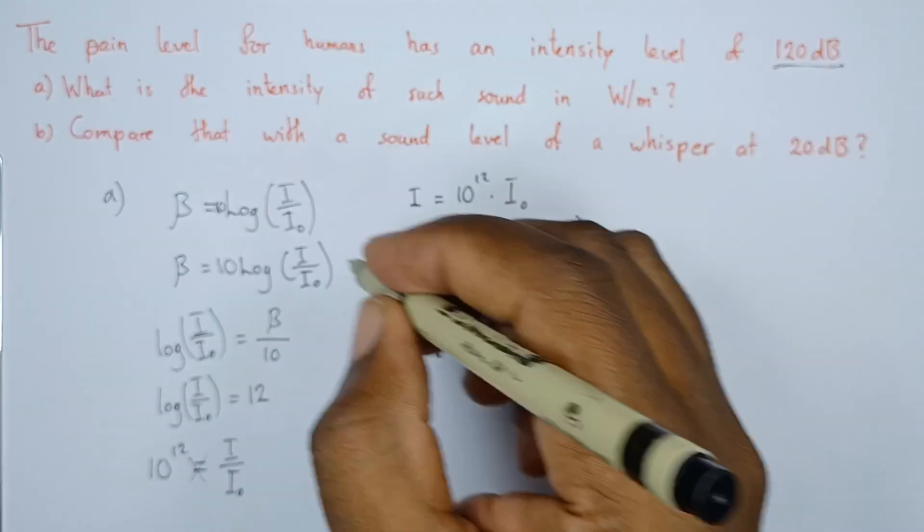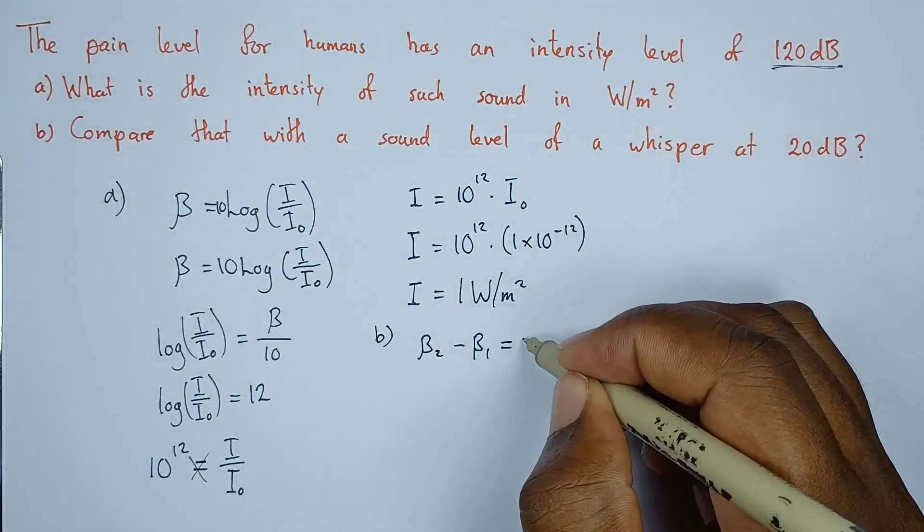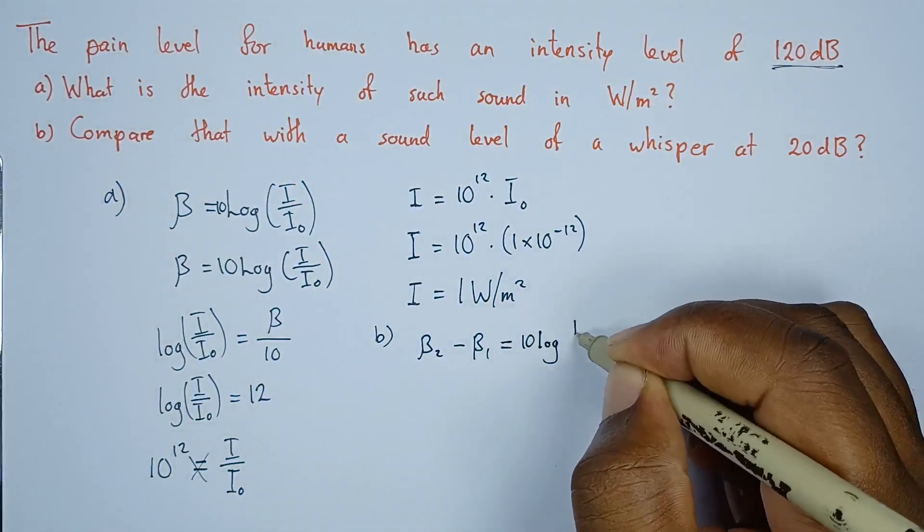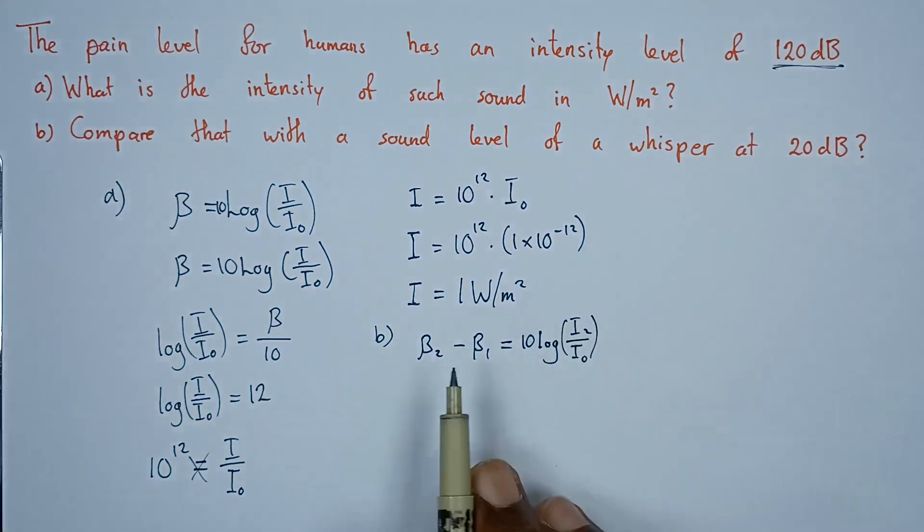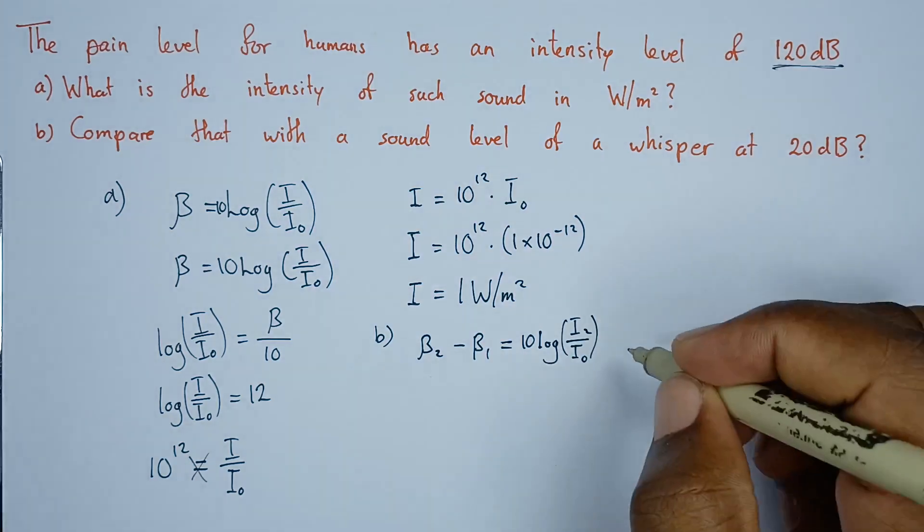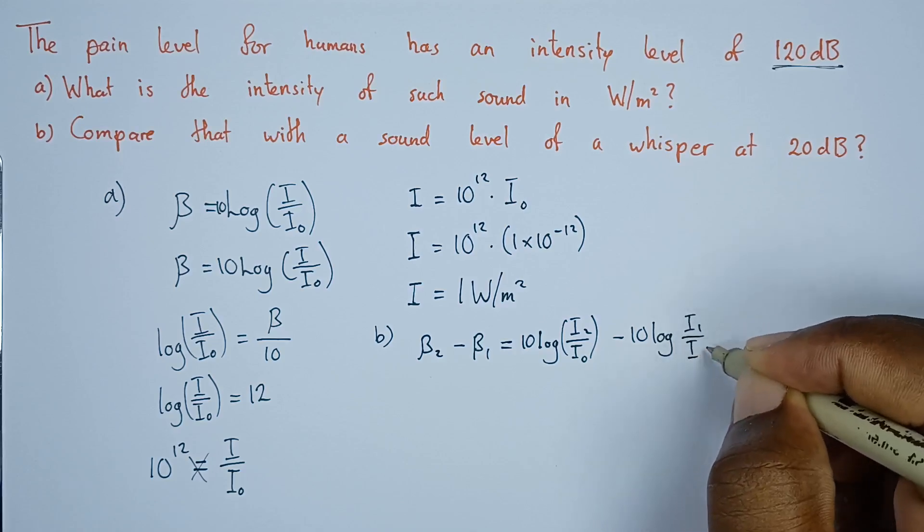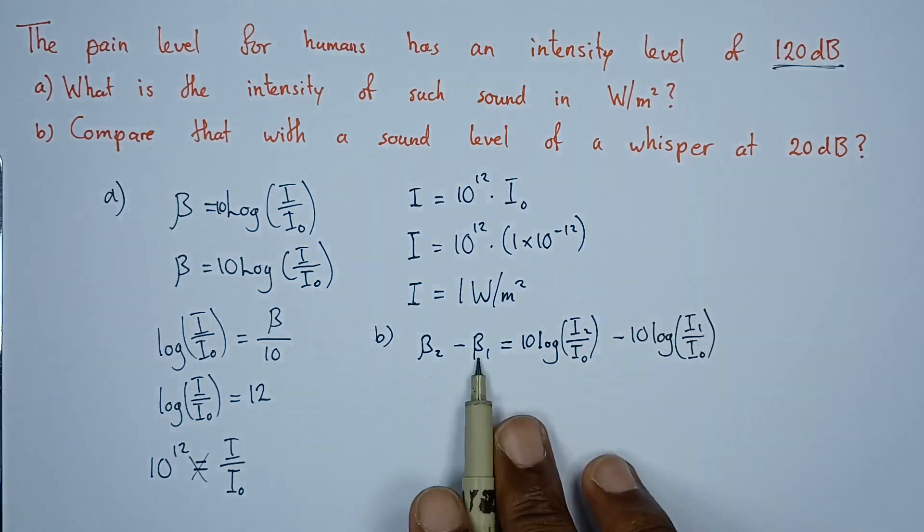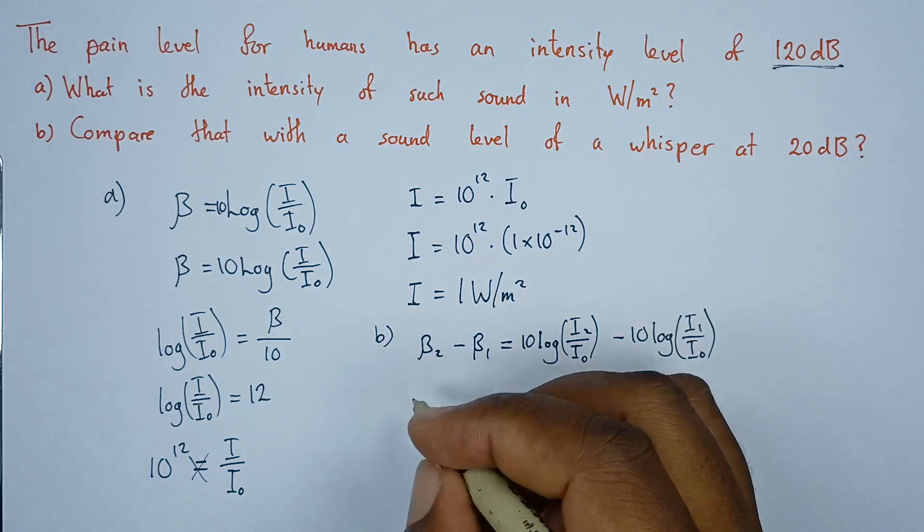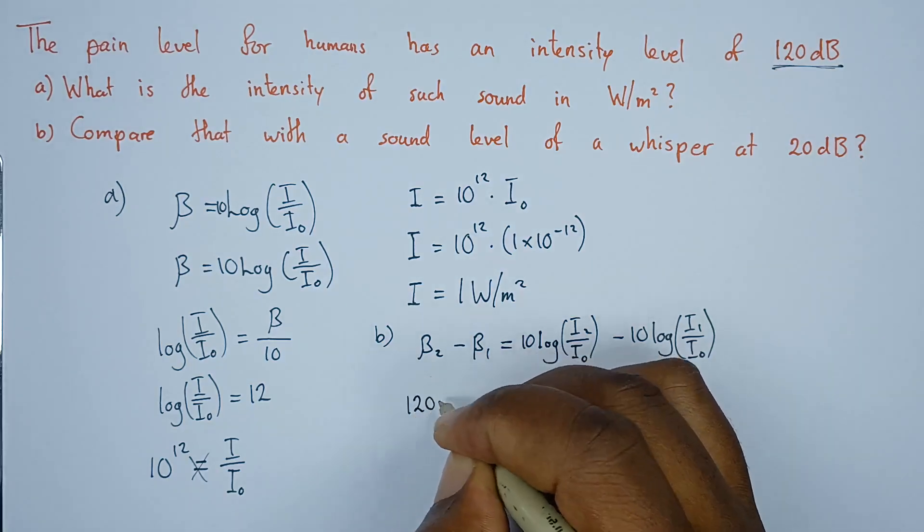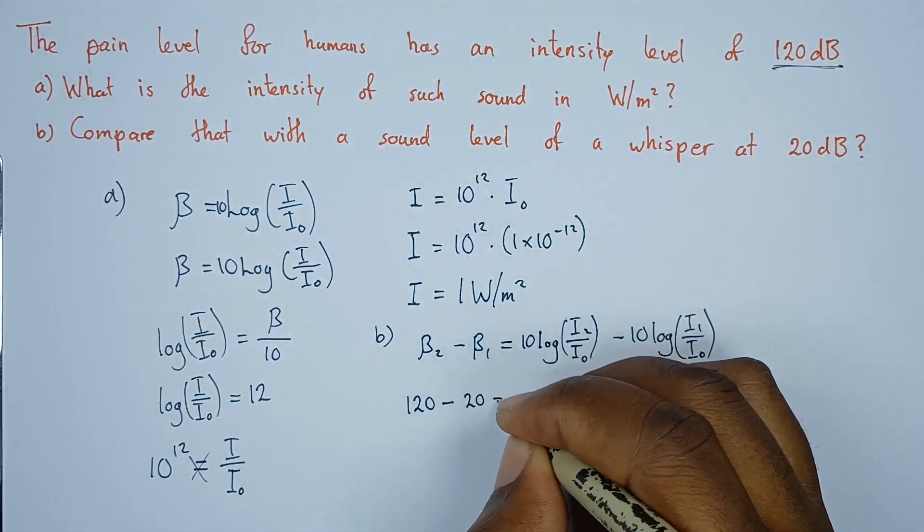We're going to apply the formula again for the level of intensity, which is 10 log I2 over I naught. For beta 2, this is the formula, minus 10 log I1 over I naught. Beta 2, we say this is 120, so this is 120 minus beta 1, which is 20.